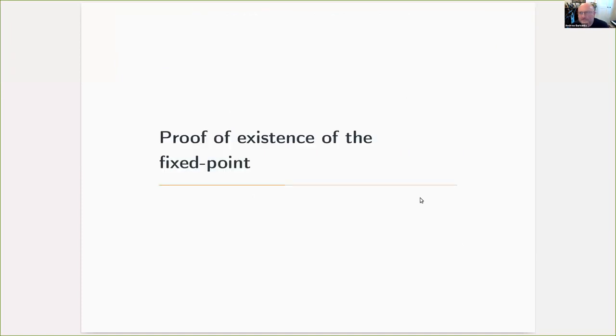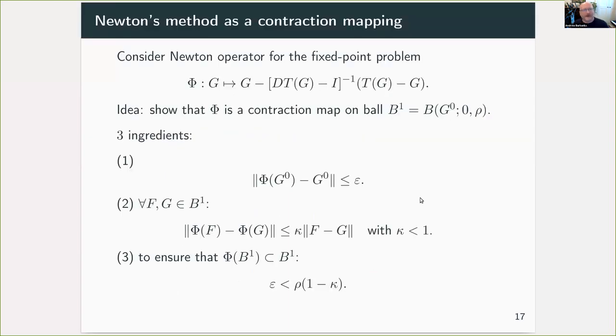So we now have a framework for doing computations rigorously in a computer. How do we prove the existence of a fixed point? Well, let's return to the Newton operator. And the idea is to prove that the Newton operator is a contraction map on a ball around our approximate fixed point. We know that the renormalization operator isn't a contraction because it has this expanding direction, but close enough to the fixed point, we would hope that Newton's method is. And there are three ingredients in doing this. We bound how far the approximate fixed point moves under Newton method. We gain a uniform contractivity constant, so this is bounding all pairwise contractivities. And finally, we have to ensure that our ball is mapped into itself.